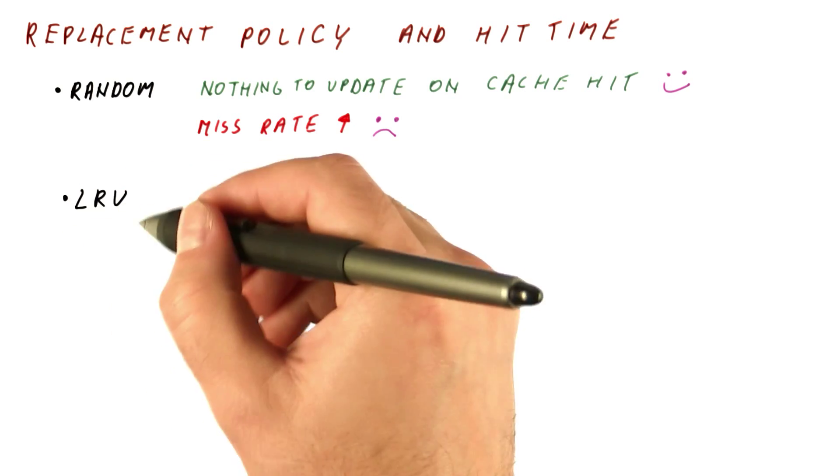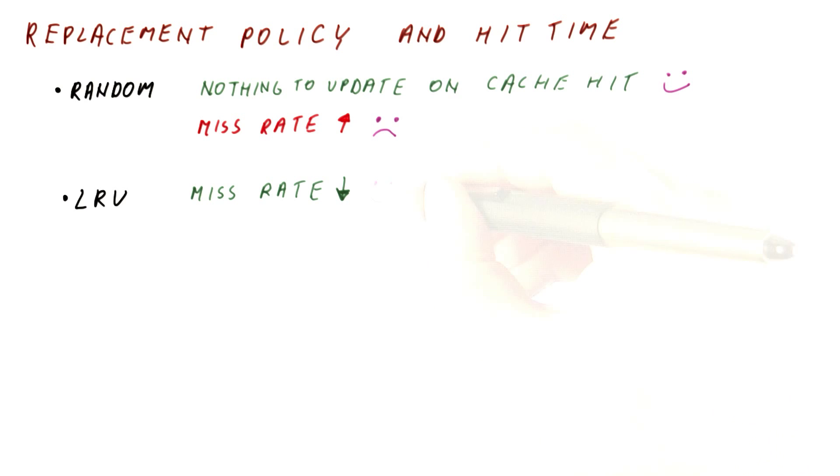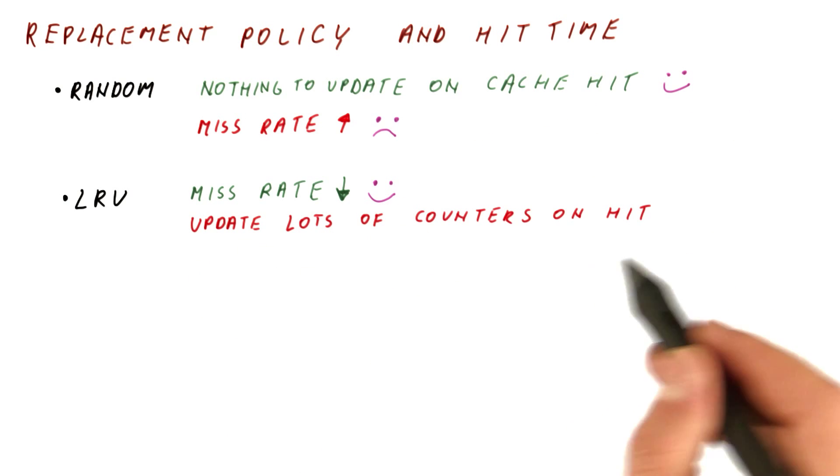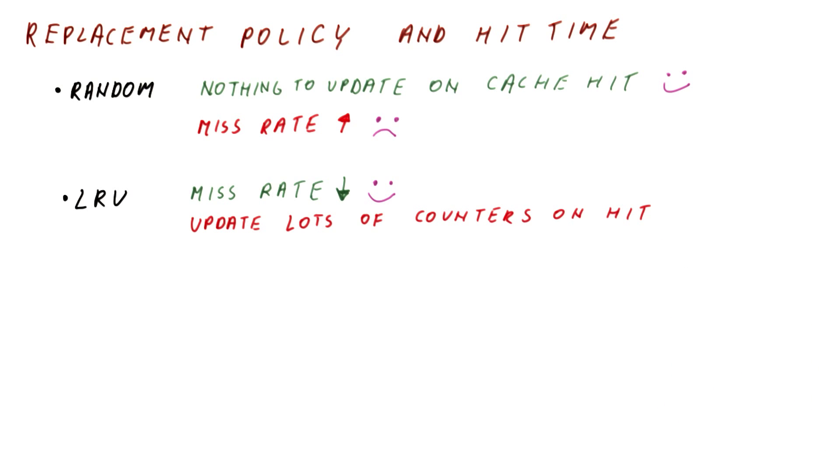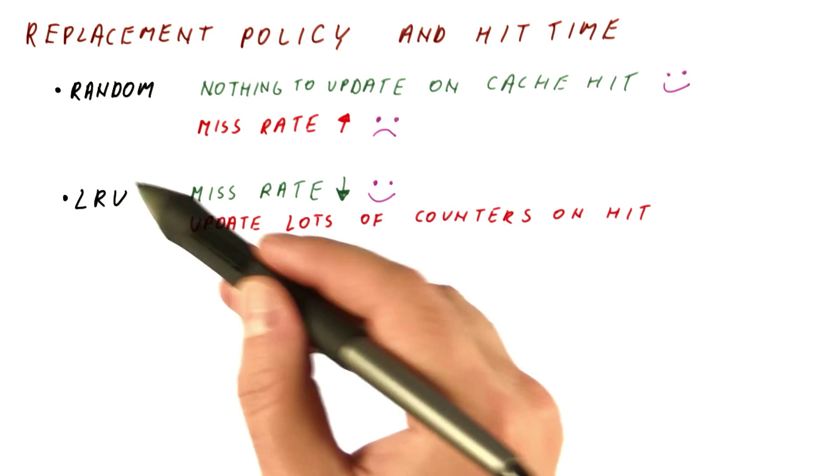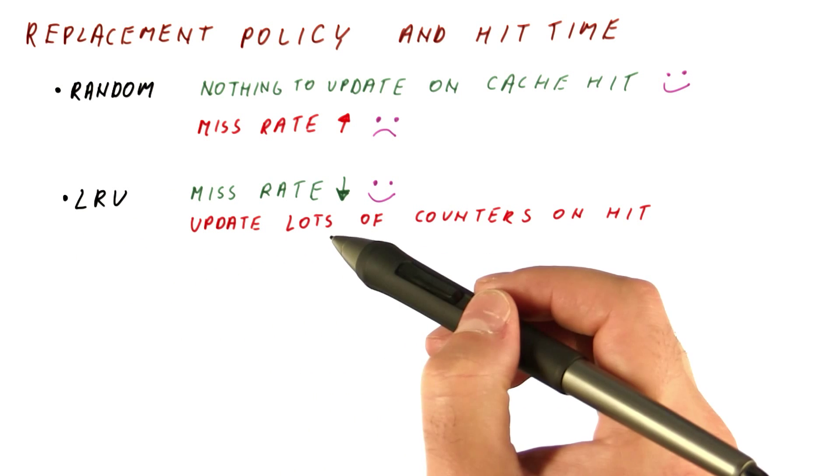In contrast, least recently used, or LRU, results in a lower miss rate, which we like. But we have to, on every cache hit, update potentially a lot of counters. Even if we don't update them, we have to look at them. So there is a lot of activity on every cache hit that results from needing the state that we will later use to select the block we will kick out.